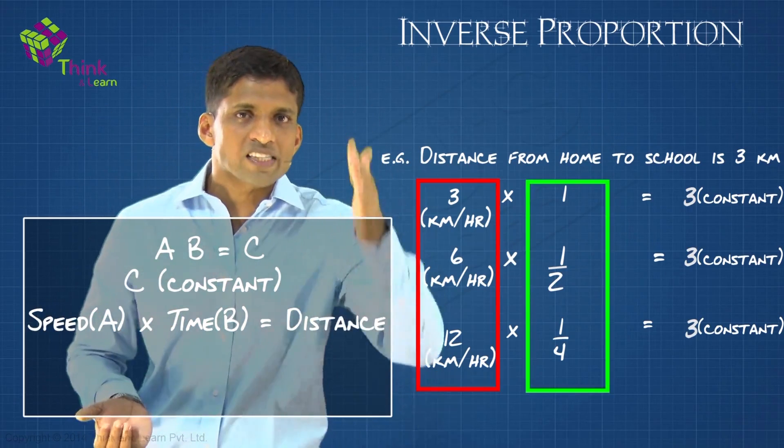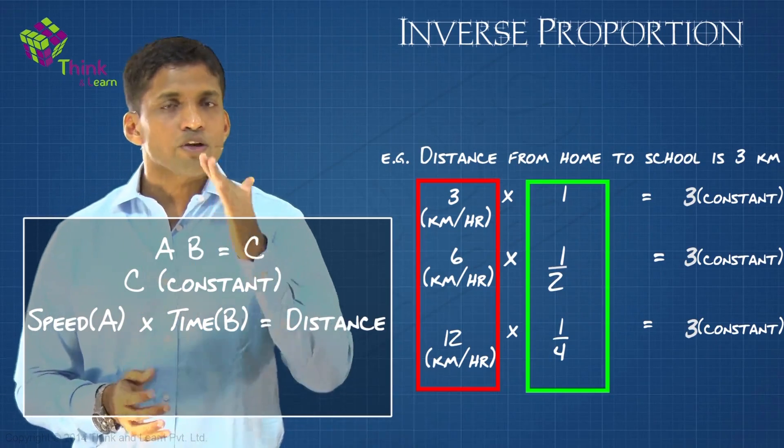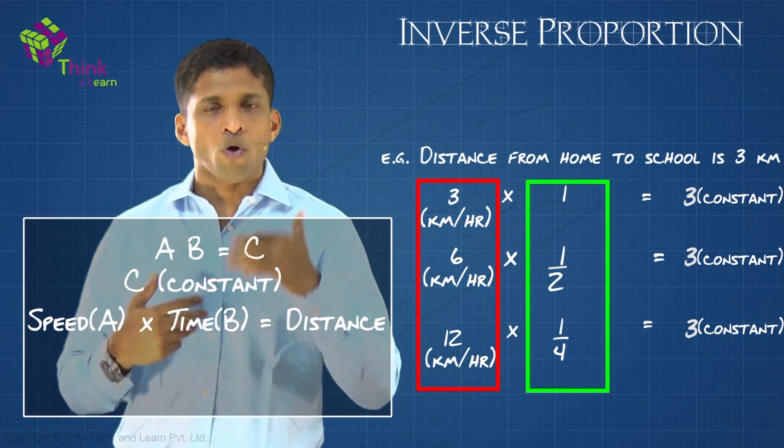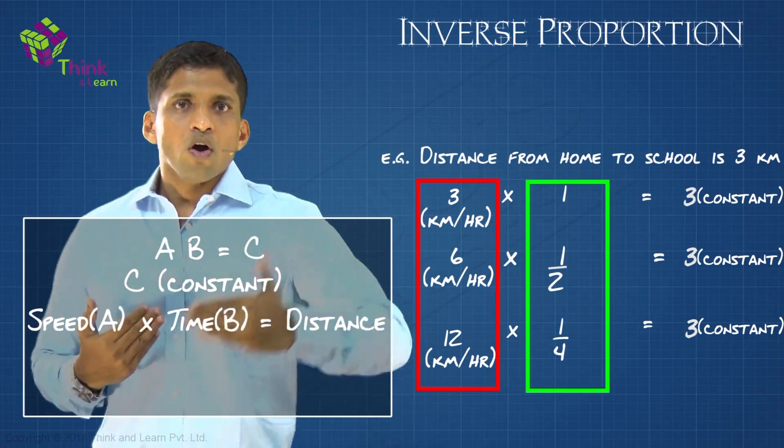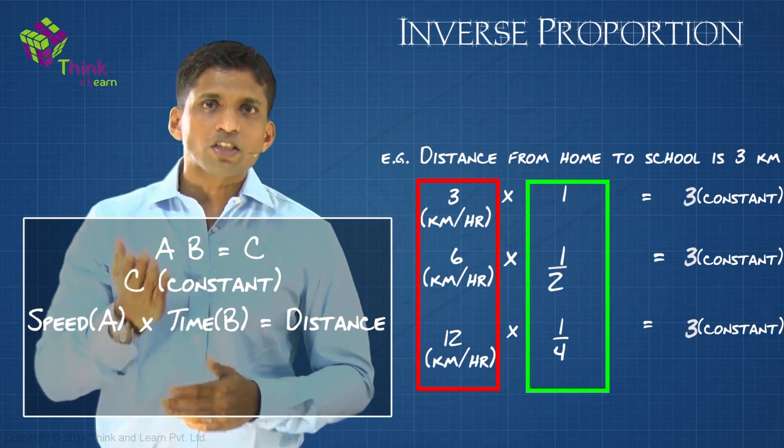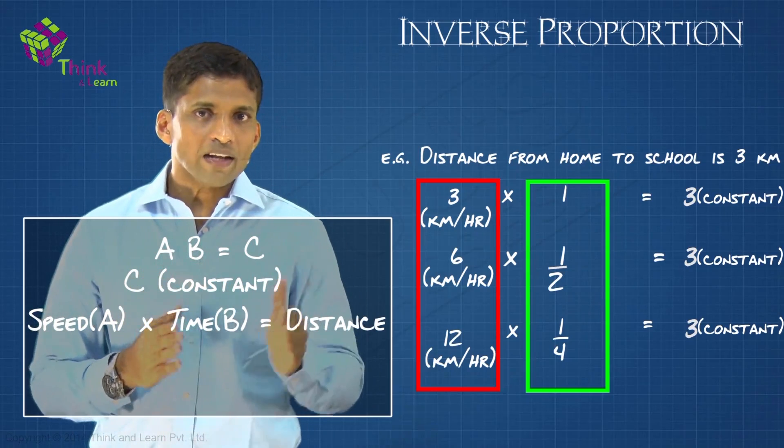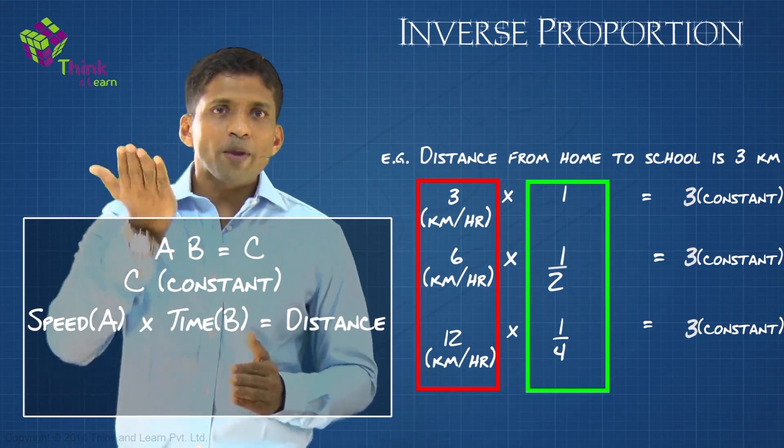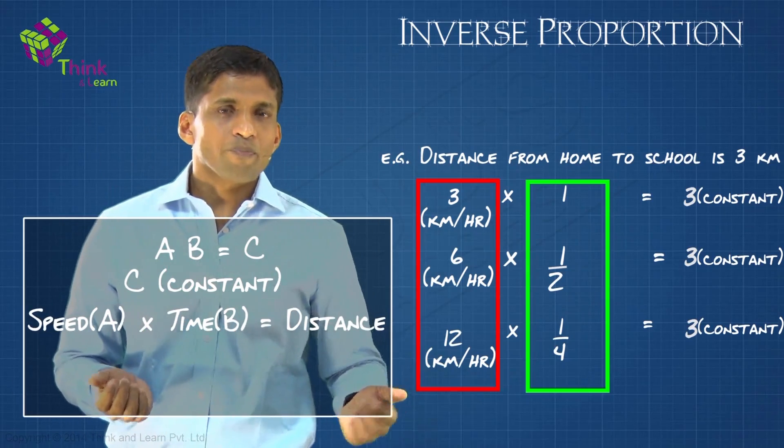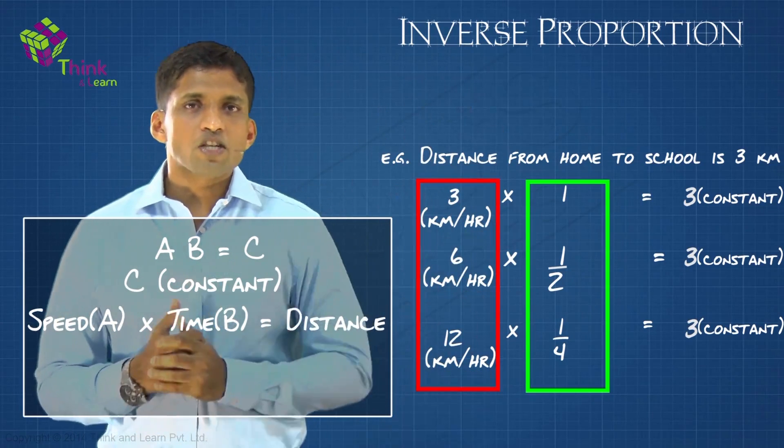More the speed, less the time taken. You don't need this example to understand that. If you are using common sense, all of you know this very well: if you go faster, you will reach earlier. I just used an example to show you that more the speed, less the time taken when the distance is constant.